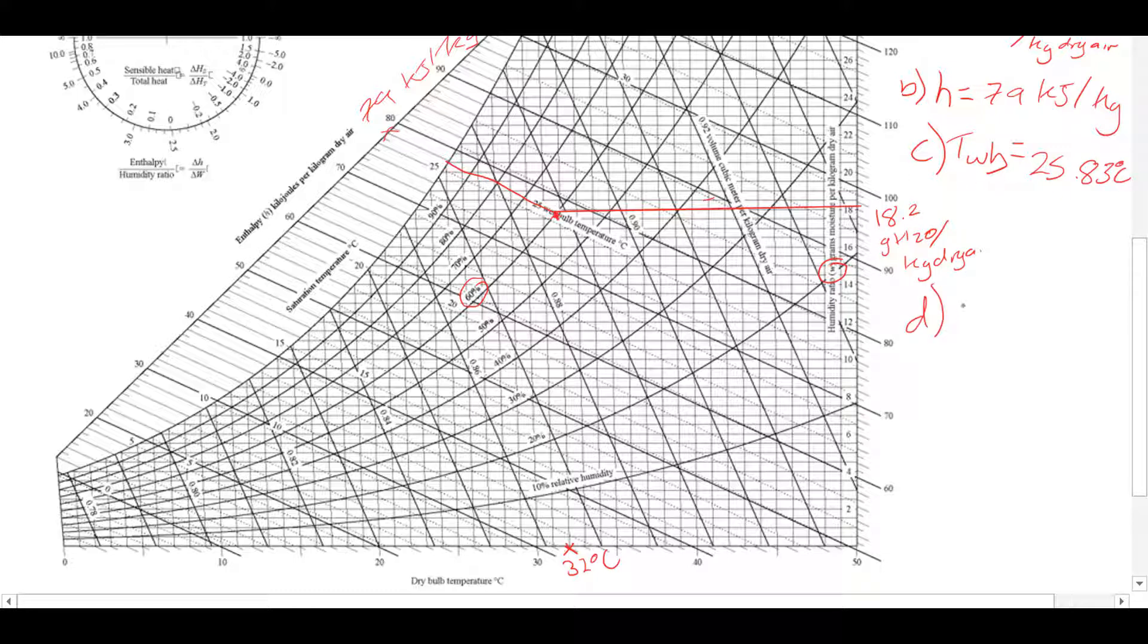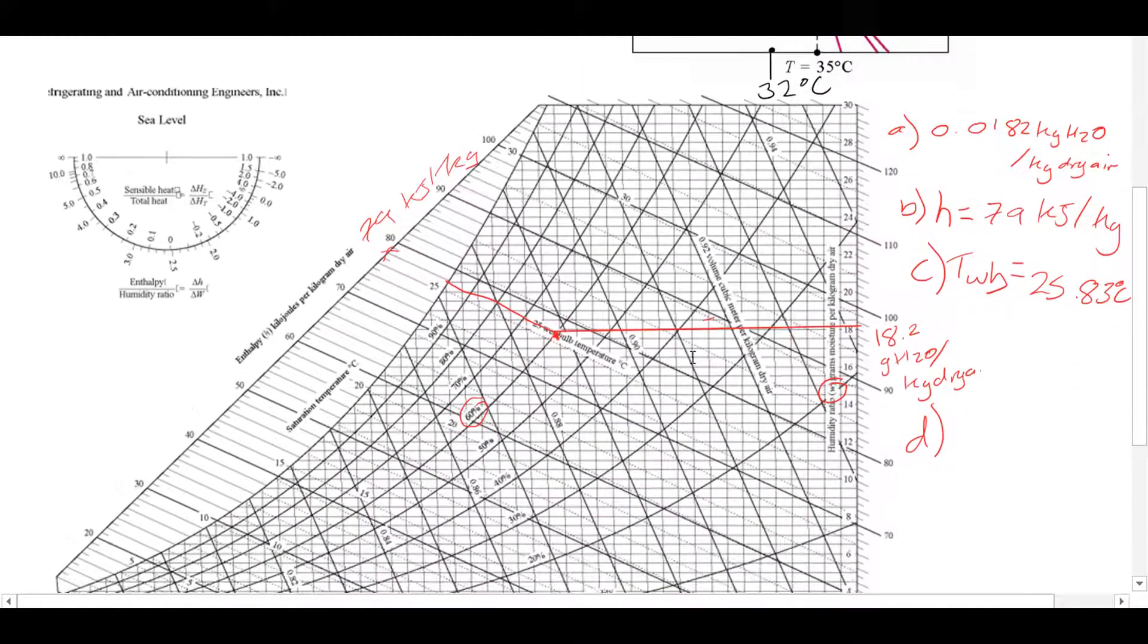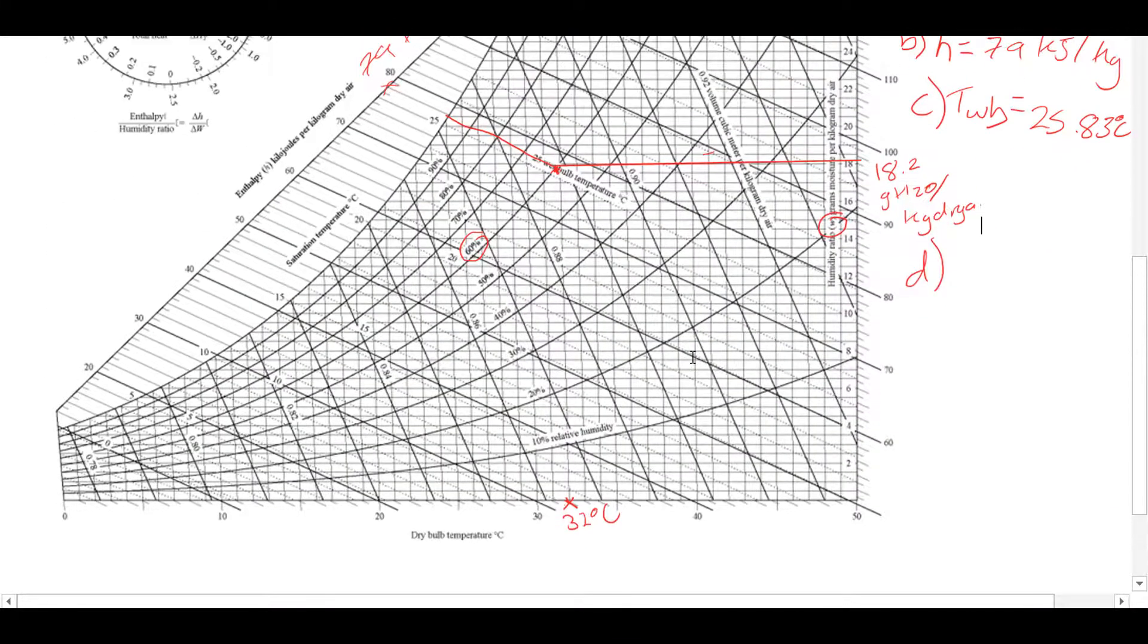Okay. And now we're looking at part D. We are interested in the dew point temperature, which going back up, was straight line across like that.